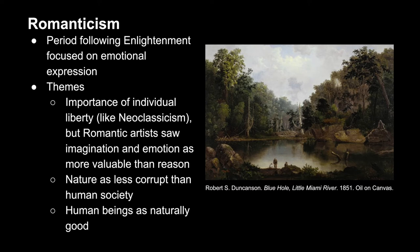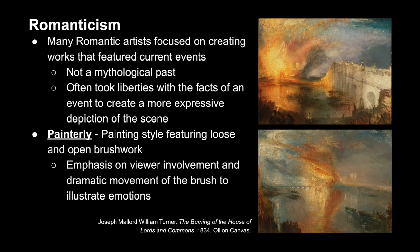Next we have Romanticism, which followed the Enlightenment and focused more on emotions and personal expression rather than rationality. While Romanticism did address themes of individual liberty, very similarly to Neoclassicism, Romantic artists saw imagination and emotion as far more valuable than reason. Romantics believed that human beings were naturally good, but had far less faith in human society, seeing it as a form of corruption, whereas nature was a form of purity and truth. Romantics also wanted to depict current contemporary topics, which was a diversion from the Neoclassical looking backwards at old myths. However, they often took liberties with the facts of events in order to create a more expressive depiction of the scene.